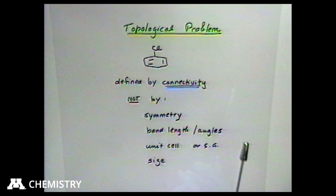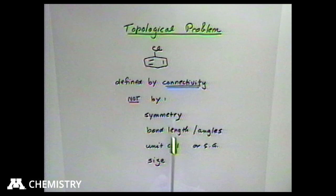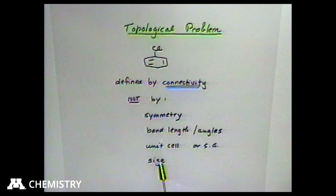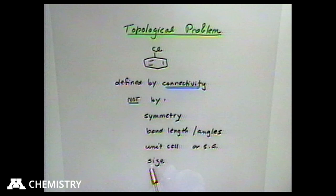We're going to look at this as a topological problem — basically talking about connectivities, like with chlorobenzene. What we're not going to do is invoke symmetry relations, bond lengths and angles, unit cell size or space group, size of the molecule, or distances between molecules. If you're a crystallographer, this is going to be very hard, because that's how crystallographers define the solid state. We have to train ourselves to forget these things so we can look at the chemical relationships between the molecules.